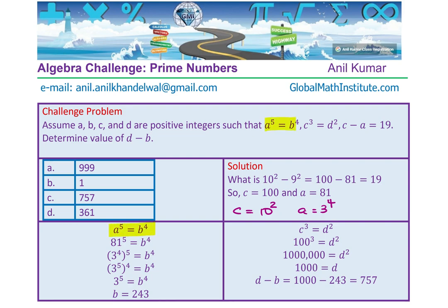And since we know what A is, we can find what B is. So substituting 81 for A, we get 81 to the power of 5 equals B to the power of 4. 81 is 3 to the power of 4, right?